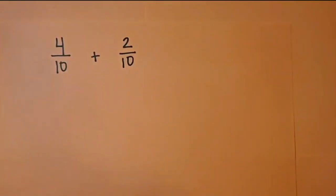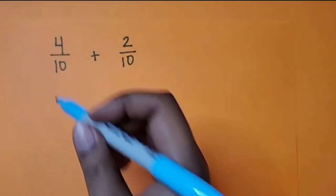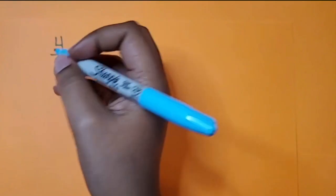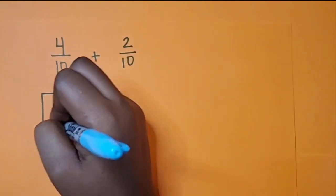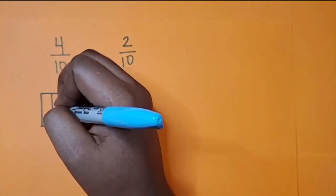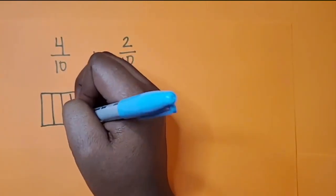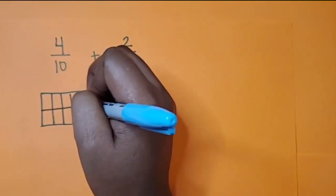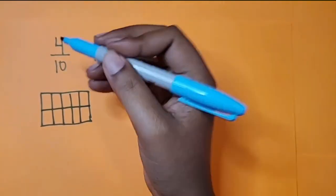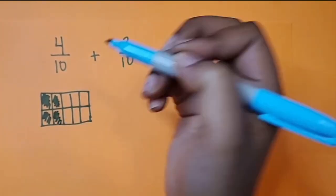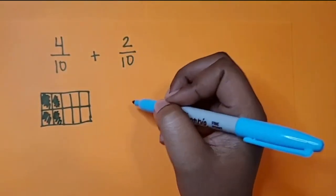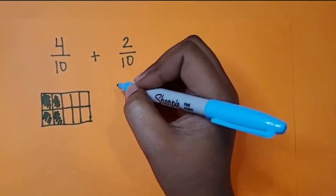What if we had 4 tenths plus 2 tenths? Let's draw our 4 tenths. And then we're going to draw our 2 tenths.